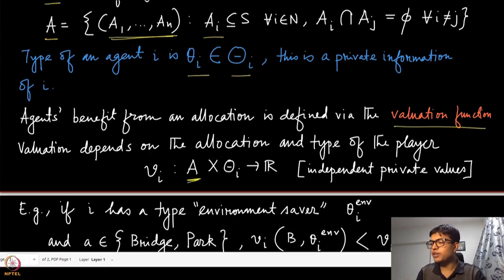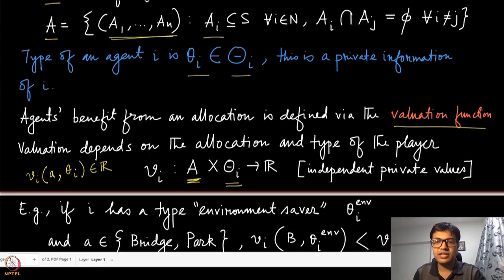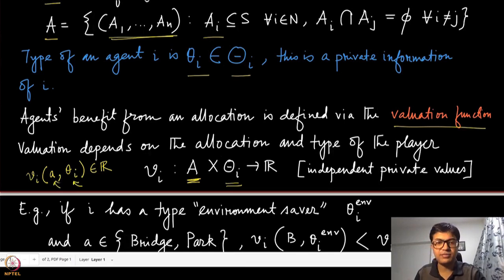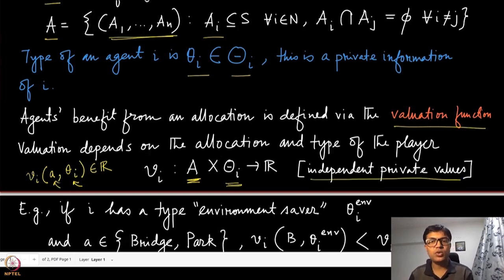The valuation function v_i takes as input a specific allocation a and the type theta_i of that player, and outputs a real number representing how much satisfaction that agent gets when allocation a is chosen and its type is theta_i. Importantly, this valuation is only dependent on the type of that agent alone and not on the types of other agents — this is exactly what is known as independent private values, and we will be discussing only independent private values in this course.